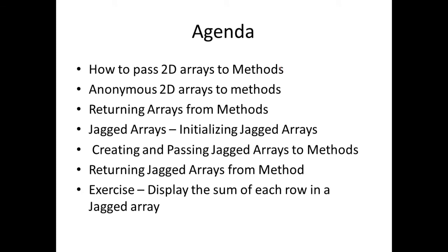In this session, we are going to learn all these topics: how to pass 2D arrays to methods, what are anonymous 2D arrays and how to pass them to methods, how to return 2D arrays from methods, what are jagged arrays, how to initialize jagged arrays, how to create and pass jagged arrays to methods, returning jagged arrays from a method, and finally we'll take up an exercise on jagged arrays — displaying the sum of each row in a jagged array after passing it to a method.